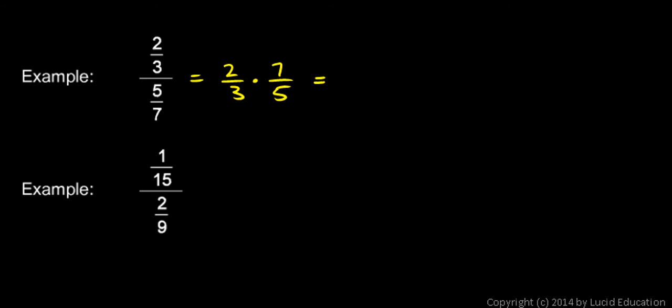Now we know how to do this. We know how to multiply two fractions. We multiply the numerators: 2 times 7, that gives us 14. And multiply the denominators: 3 times 5 gives us 15. And that's our answer, 14 fifteenths.